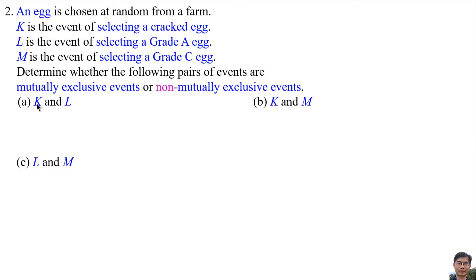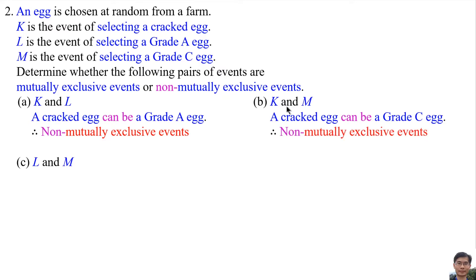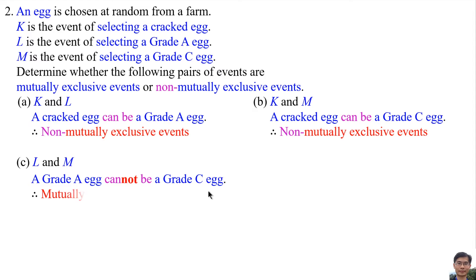A correct egg can be a grade A egg, so K and L are non-mutually exclusive events. Part B: K and M. A correct egg can be a grade C egg, so K and M are non-mutually exclusive events. Part C: L and M. A grade A egg cannot be a grade C egg, so L and M are mutually exclusive events.